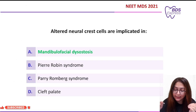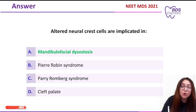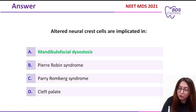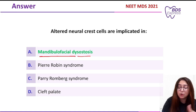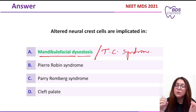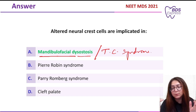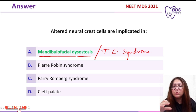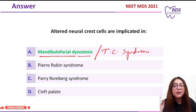The correct answer is Treacher-Collins syndrome, also known as mandibulofacial dysostosis. Questions on syndromes can be asked in exams, so you need in-depth knowledge of all these syndromes. Hope you liked the class — it was straightforward but requires that depth of knowledge. Thank you.